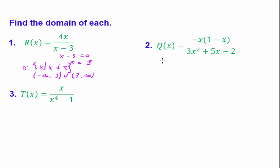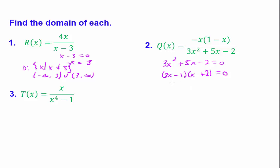For the second problem, we set the denominator equal to 0 and solve the quadratic. I choose to solve it by factoring, though you could use the quadratic formula. The factors are (3x minus 1) and (x plus 2). Setting each factor equal to 0 gives x equals 1 third and x equals negative 2. So these are your two restrictions.